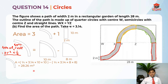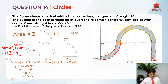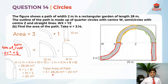This gives us 28.26 meters squared — and this is only for one of the three pieces. Now we find the rectangle, which is easy because we already know its length and breadth: 10 meters and 2 meters. Length times breadth equals 10 times 2, which equals 20 meters squared. The total area of the path equals 3 times 28.26 meters squared plus 20 meters squared, which equals 104.78 meters squared.